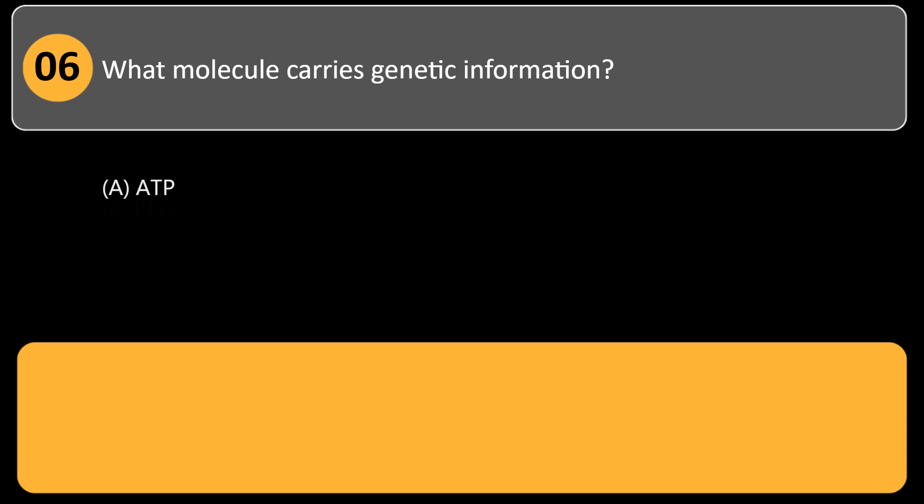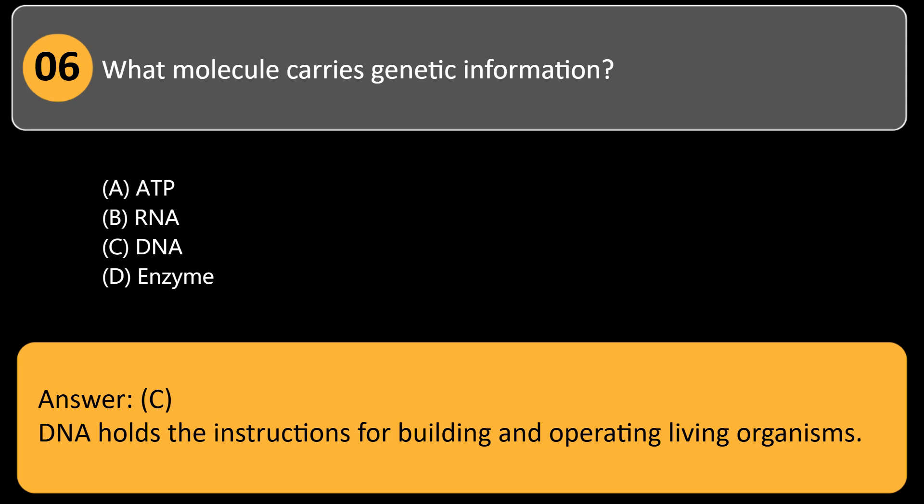What molecule carries genetic information? A. ATP, B. RNA, C. DNA, D. Enzyme. Answer: C. DNA holds the instructions for building and operating living organisms.